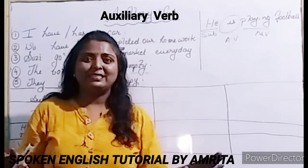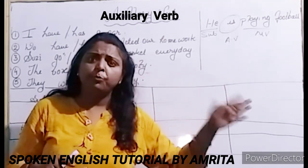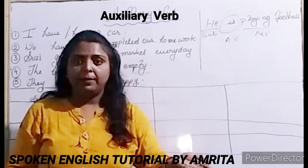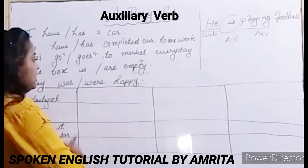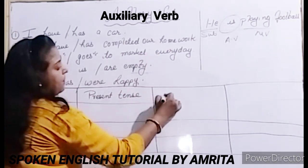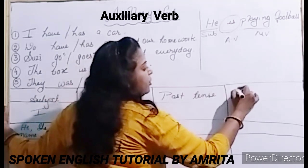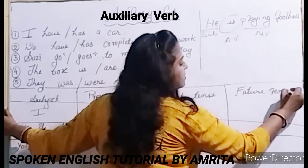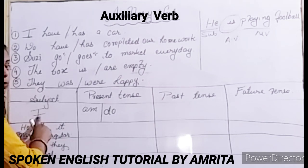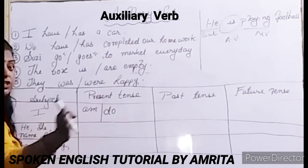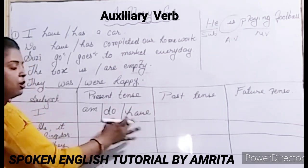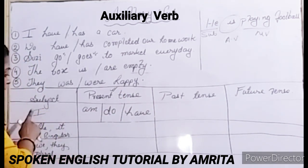Present tense means whatever is happening now. Past tense is what has already passed — jo ho gaya. Future tense is what is going to happen — aane wala. Let's divide the chart into three parts: present tense, past tense, and future tense. Now, always remember — with subject 'I' in present tense, you are going to use 'am.' For example: 'I am a teacher.' With 'I,' you will also use 'do,' and you can also use 'have.' These three auxiliary verbs — am, do, have — are used with 'I' in present tense.